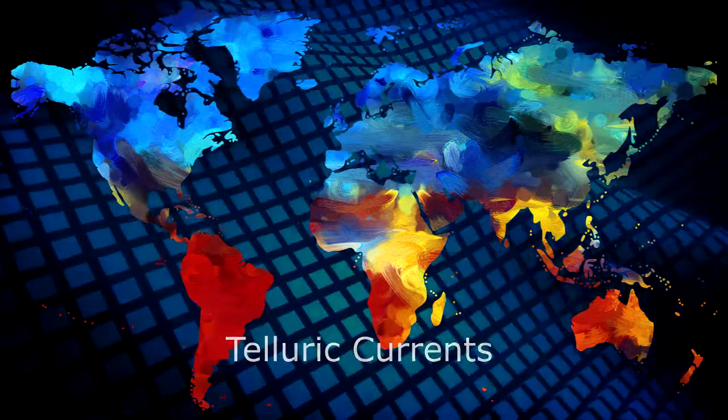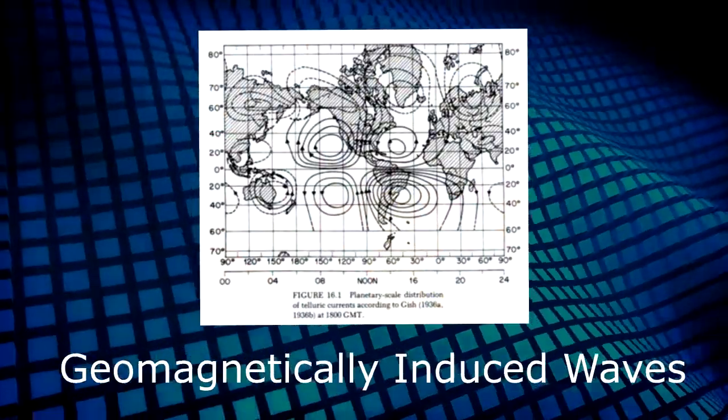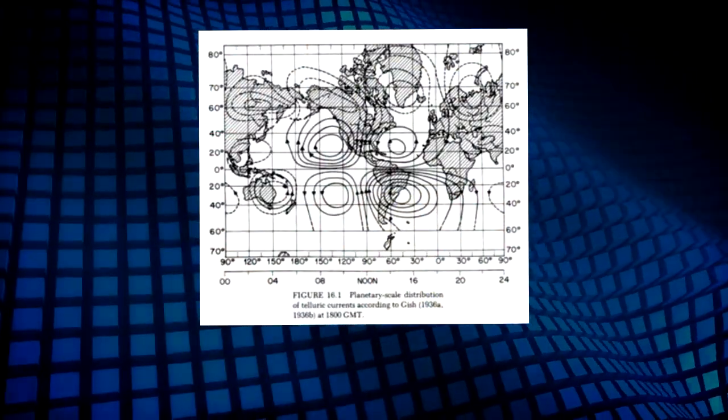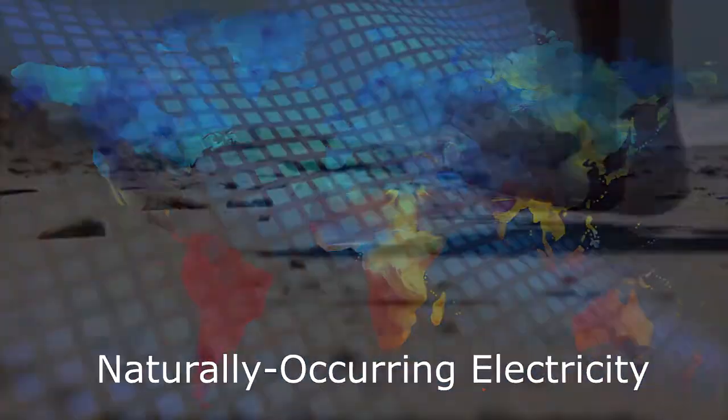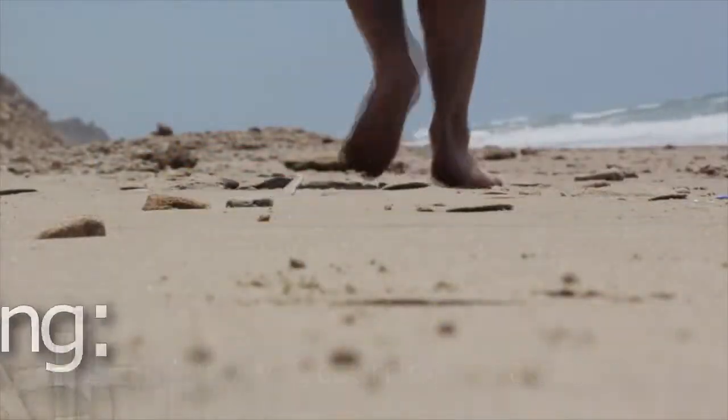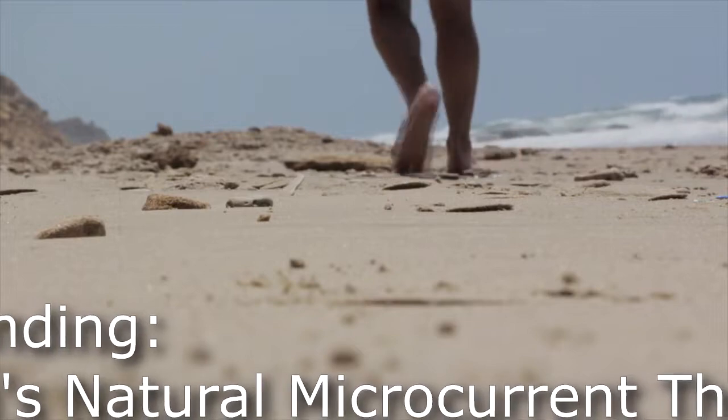Now, let's look at the electrical currents that are naturally occurring in the Earth. These are called telluric currents. The telluric currents are geomagnetically induced waves that flow across the surface of the Earth. That is, there is literally natural electricity flowing through the ground, which is one of the reasons grounding or earthing is so healthy.